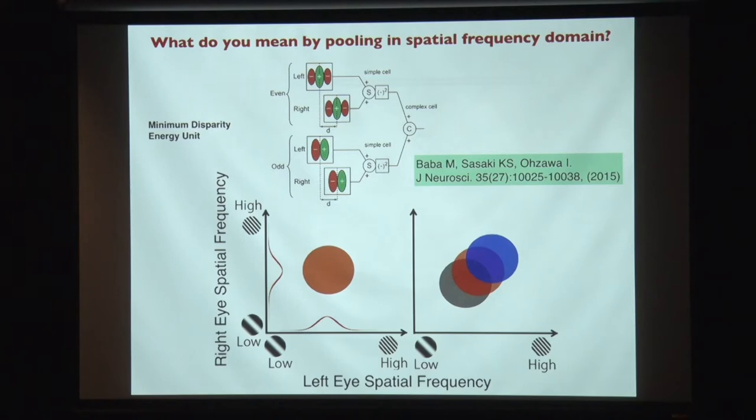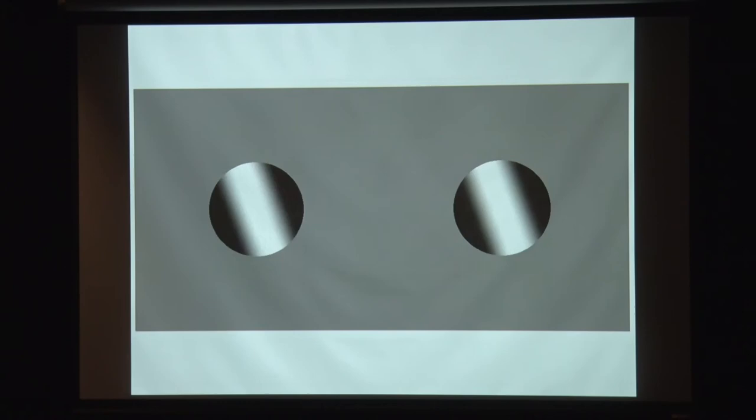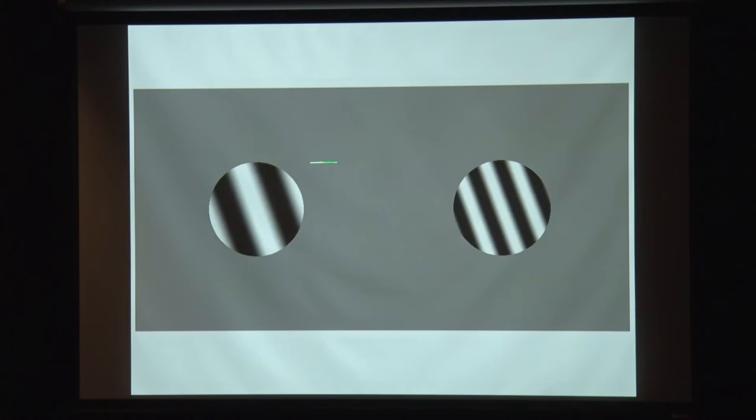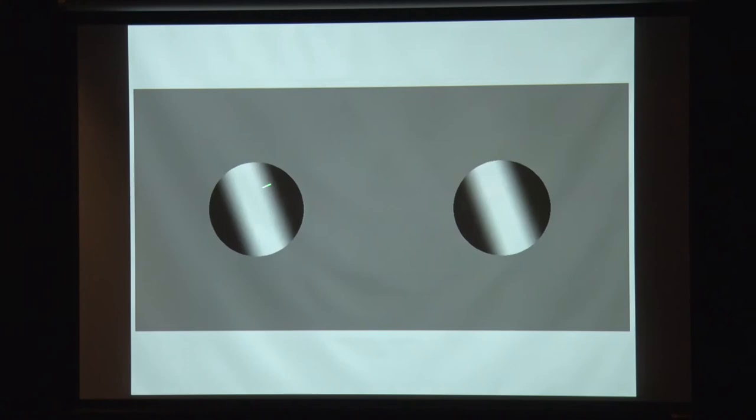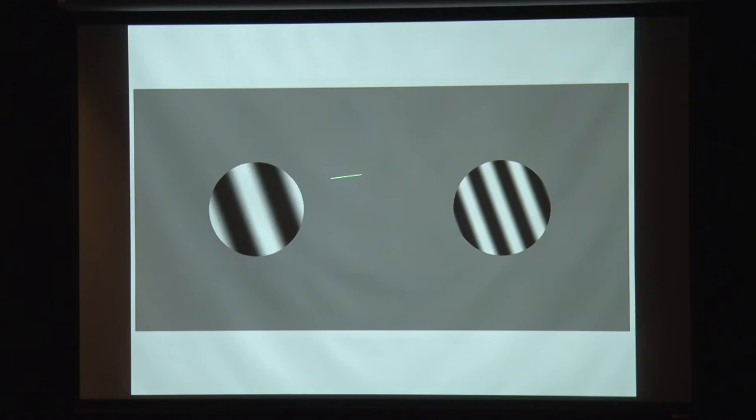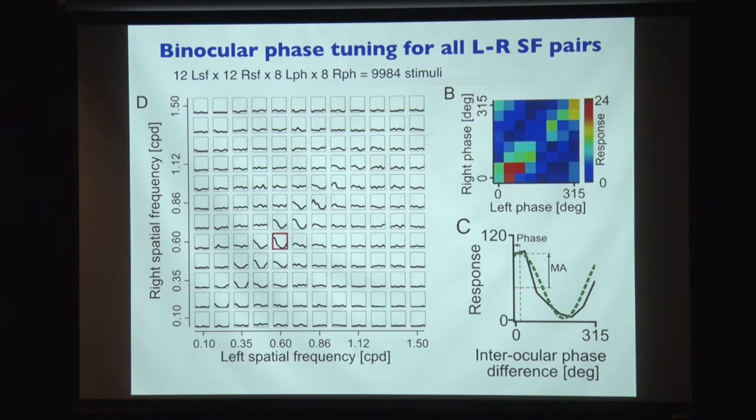What we did was to use stimuli where spatial frequency changes in the left and right eyes independently. We also changed the spatial phase — twelve different frequencies for left and right eyes, and eight different phases for each eye. That's a fairly massive experiment, with a total of close to 10,000 stimuli.